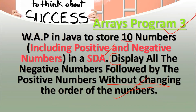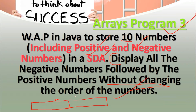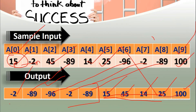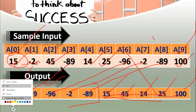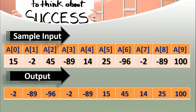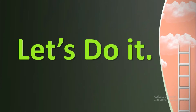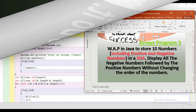Humein aise input karvani hai values - pehle user se positive aur negative numbers. Phir uske baad humein jo negative numbers hain unko bina sequence change kiye pehle print karvana hai negative ko, phir uske baad humein print karvane hain positive integers jo ki humne us list ke andar enter kiye. Aap yeh sample input aur sample output dekh sakte hain. Now let's do it practically according to the program.